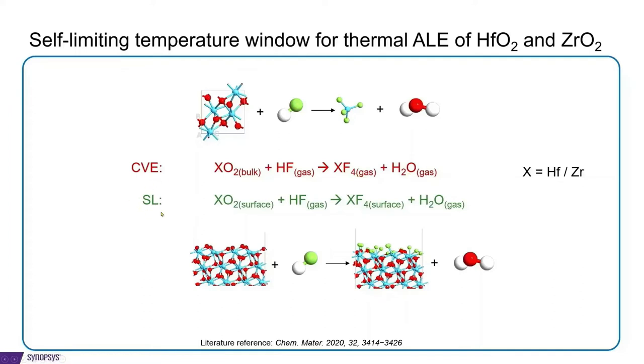In a self-limiting reaction, we start with the surface of the oxide and bring in hydrogen fluoride gas, which results in surface passivation of the oxide, and some of the oxygen atoms on the surface are removed as water molecules.